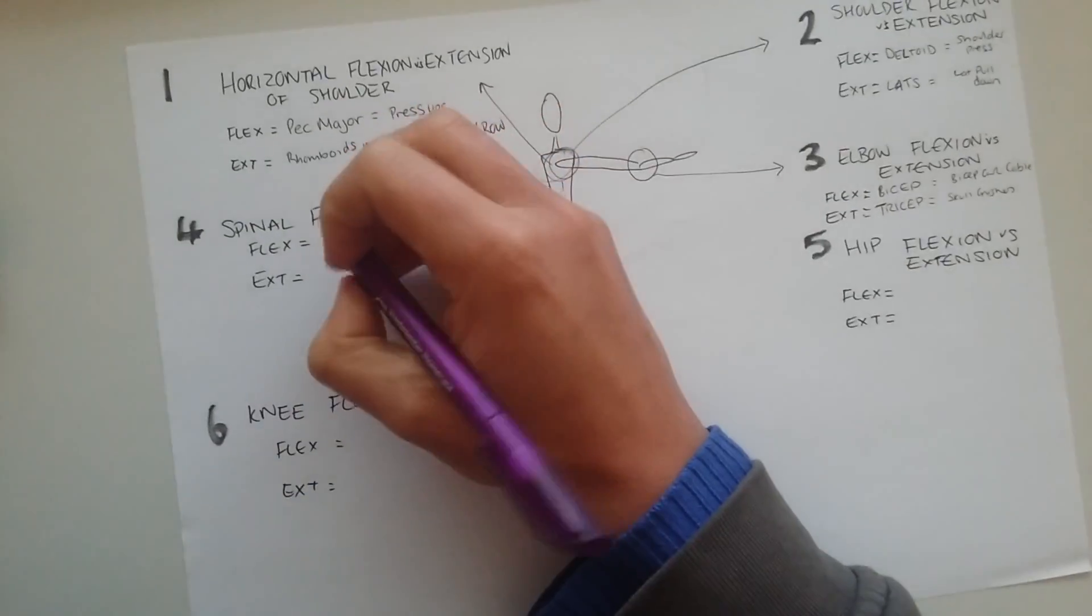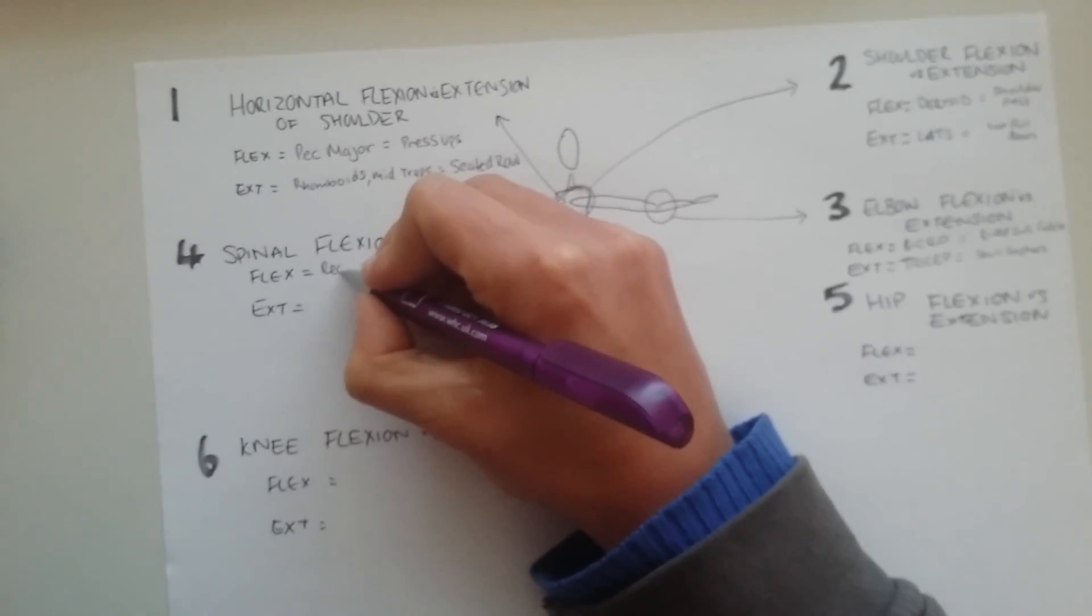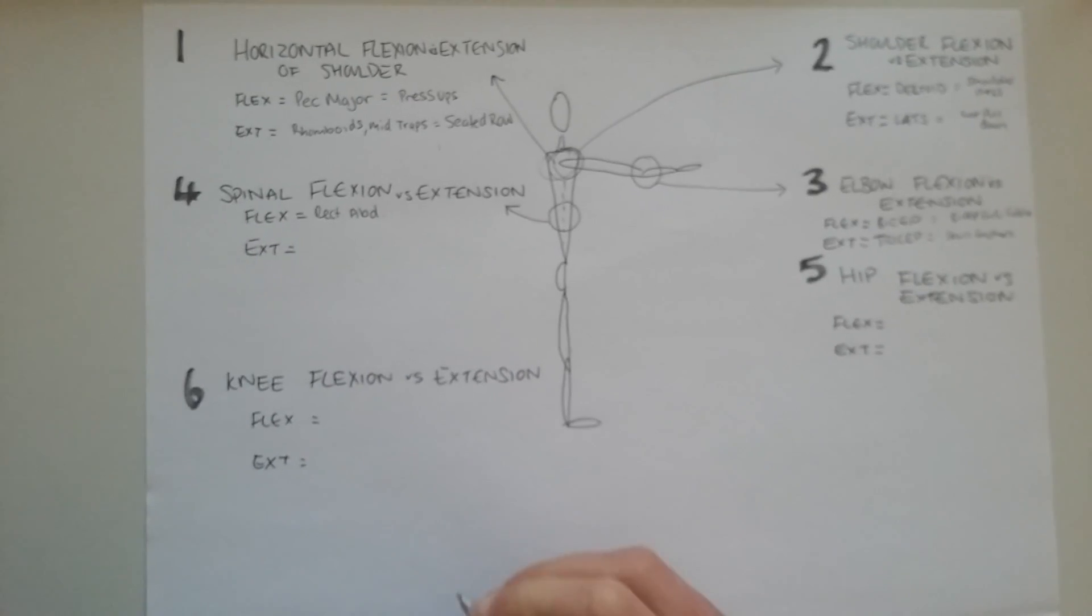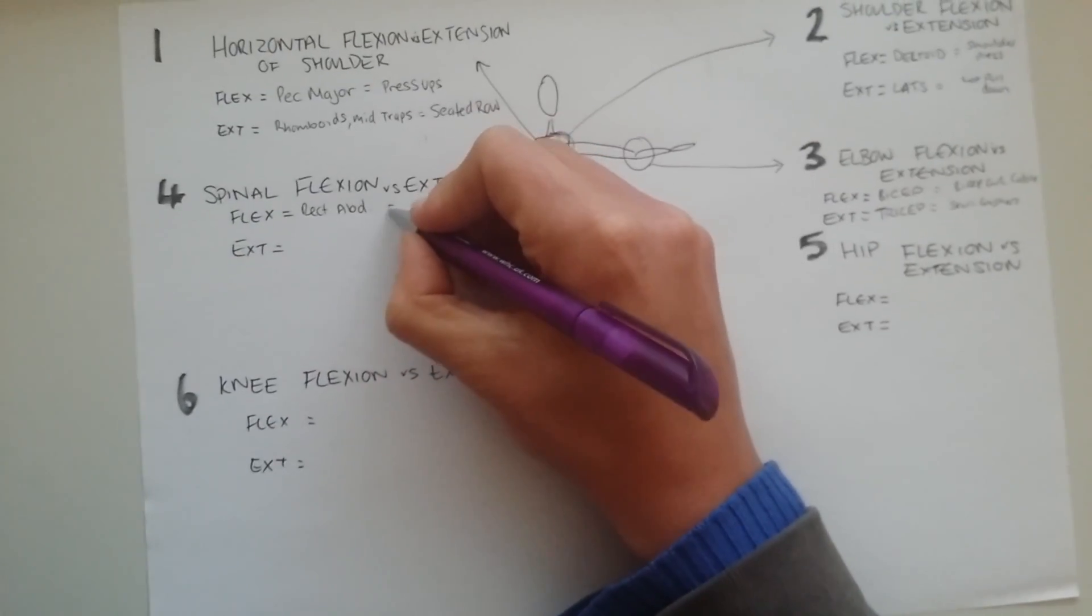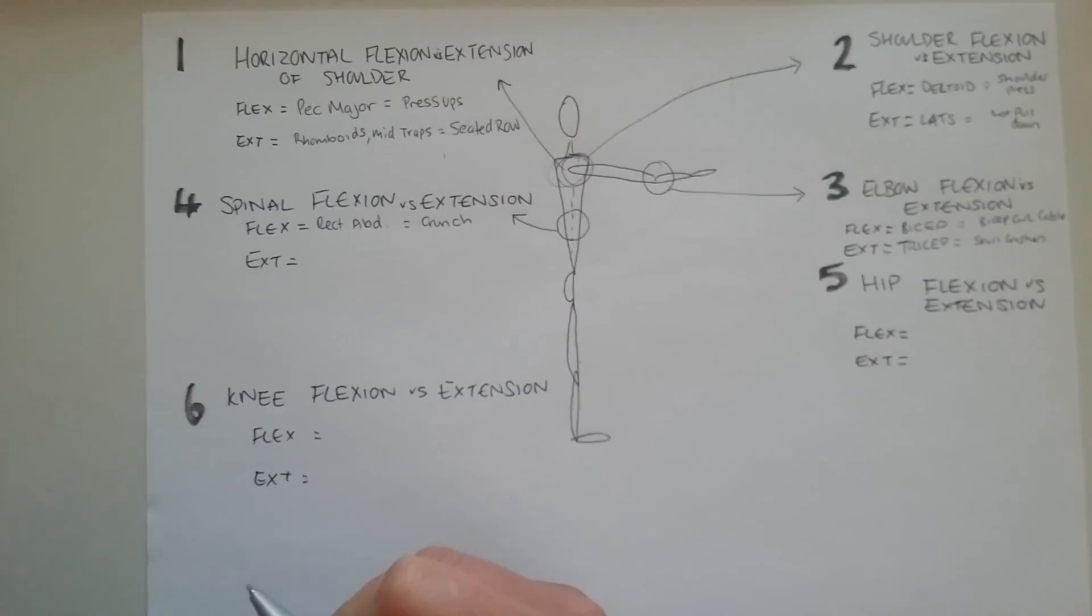So we're just going to look at flexion and extension of the spine. Again, flexion is going to be our abs. So that's going to be our rectus abdominis. So rectus abdominis. And then an exercise that does that, I'm going to put in a crunch. That's a nice obvious one, I know. But an ab crunch can go in there. Or a reverse crunch, I'm happy with that.